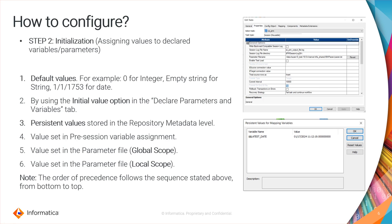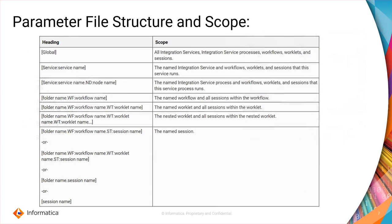This is the order of precedence — it follows the exact sequence from bottom to top. For example, if you have set values in two places — one in the initial value option and another in the parameter file — then it will consider the value from the parameter file because it is at the top of the hierarchy. You can use specific tags to specify the parameter or variable along with its scope in the parameter file.